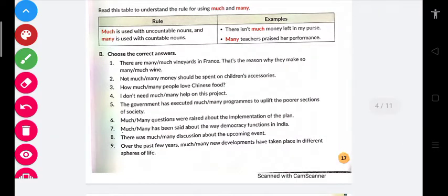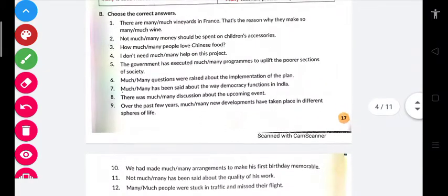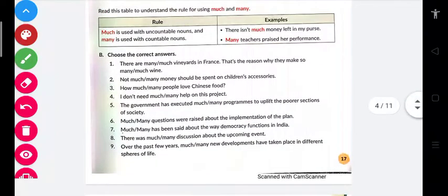Now students, if you are able to understand or differentiate between much and many, again comes your homework which is part B. Here are total number of questions, around 12, so you have to attempt these questions. For your help, I'm giving a hint for some of the questions. Let's look at question number three: 'How much/many people love Chinese food?' If I talk about people, you can count - although you cannot count the total number of people, but at least you can start counting. If counting is possible, it means it's a countable noun, and if it's a countable noun, then many should be used.